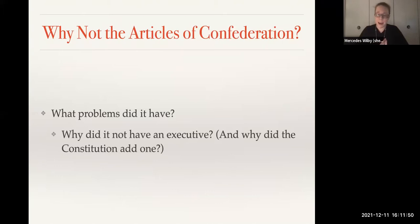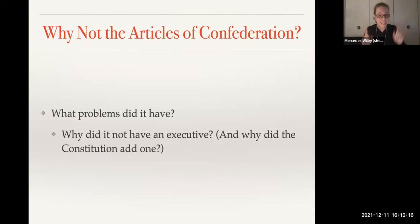Looking back at the first half of the semester: the Articles of Confederation failed largely because of massive coordination problems — they had not implemented nearly enough tools to help avoid them. So we shifted away from the Articles of Confederation to the Constitution. The Articles didn't have an executive, and the Constitution added one. The main reason was that the Articles didn't want a tyrant, but the framers of the Constitution realized we could have a president without risking tyranny — we just had to develop the right type of system.